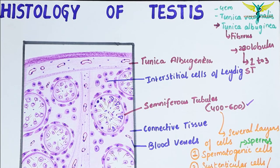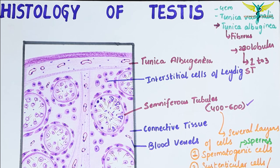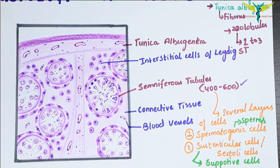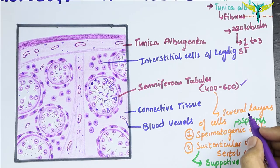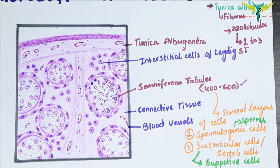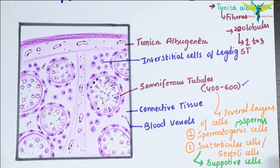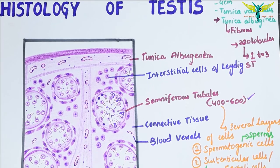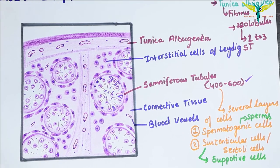Each seminiferous tubule is lined by several layers of cells, mainly of two types: the spermatogenic cells, which produce the spermatozoa, and the sustenticular cells — also called Sertoli cells — which have a supportive function. That is all about the histology of the testis. If you like this video, please subscribe to my channel.